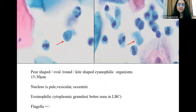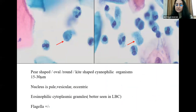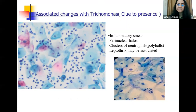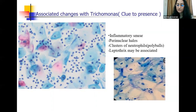It is a pear-shaped, oval, round, kite-shaped, eosinophilic organism, 15 to 30 microns in size. The nucleus is pale, vesicular and eccentric, and the cytoplasm shows eosinophilic cytoplasmic granules. Flagella may or may not be seen. Certain associated changes can give a clue to the presence of Trichomonas: inflammation, perinuclear halos in the squamous epithelial cells, poly balls — clusters of neutrophils sticking to the epithelial cells — and you may see Leptothrix, which are long filamentous bacteria associated with the presence of Trichomonas.